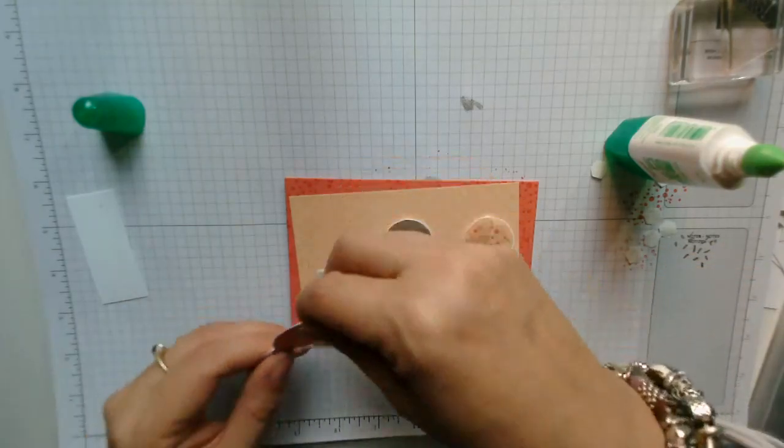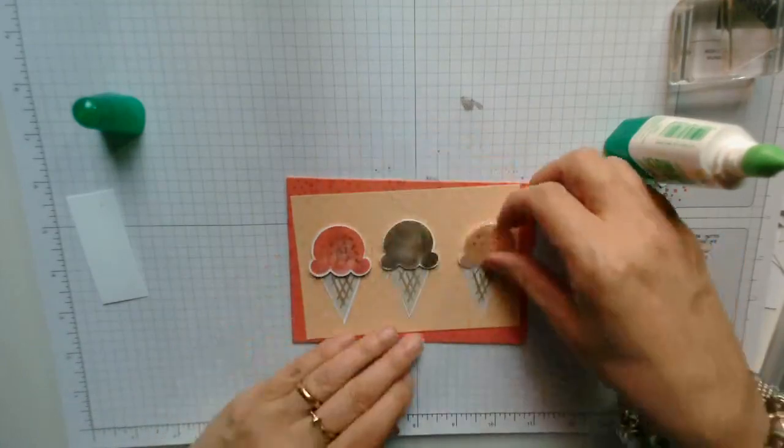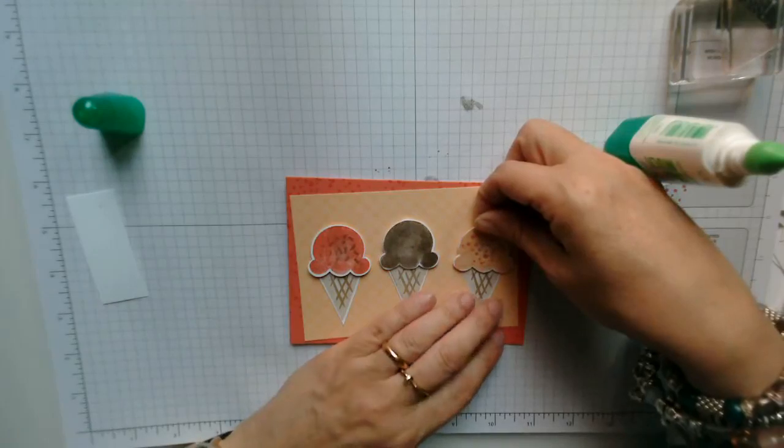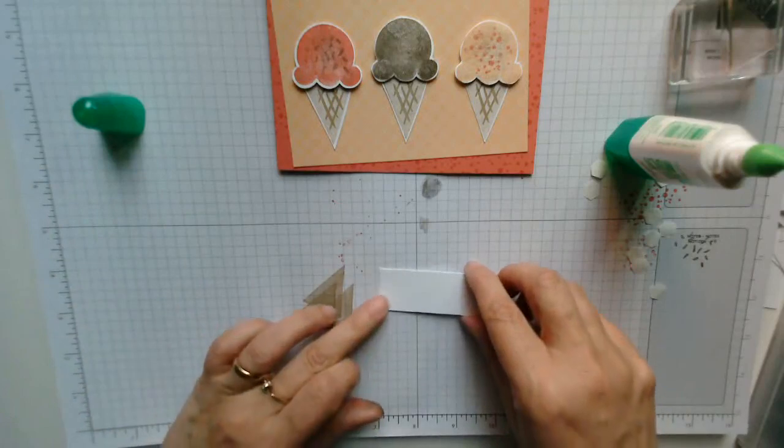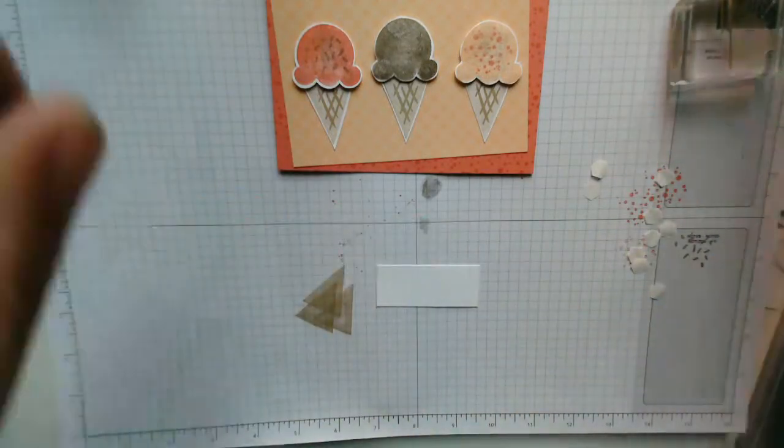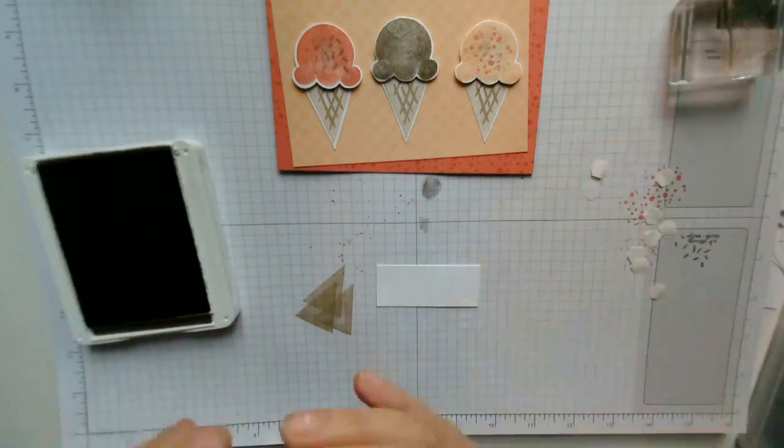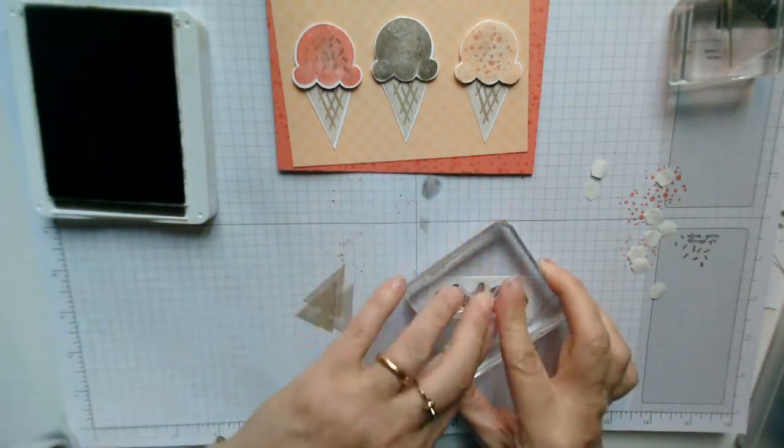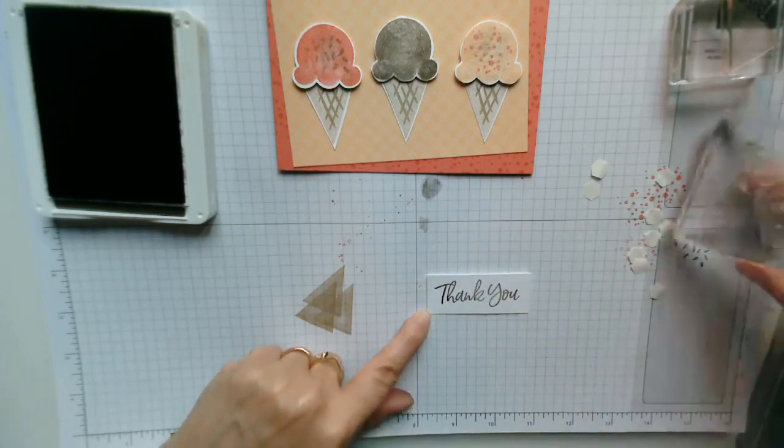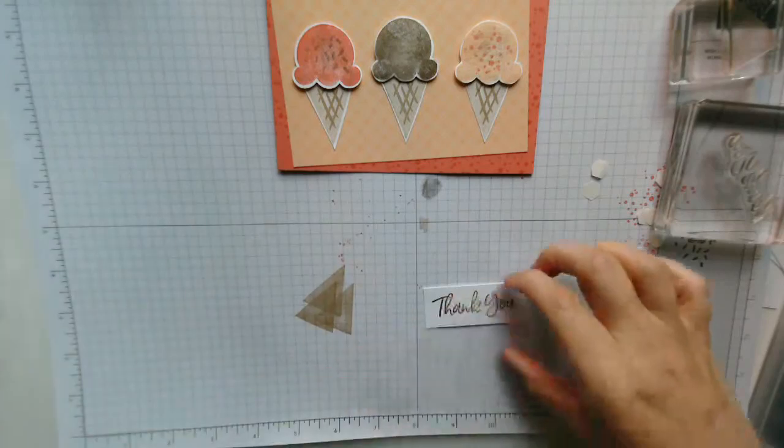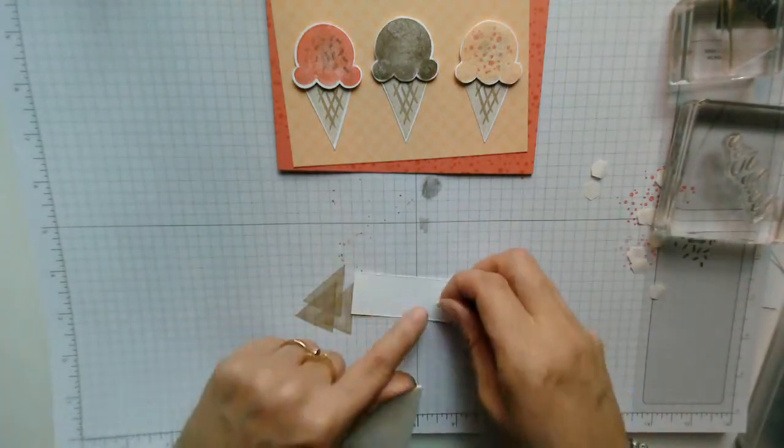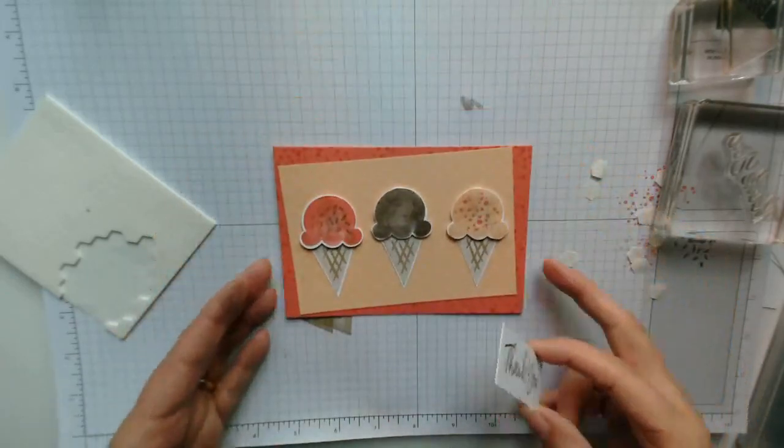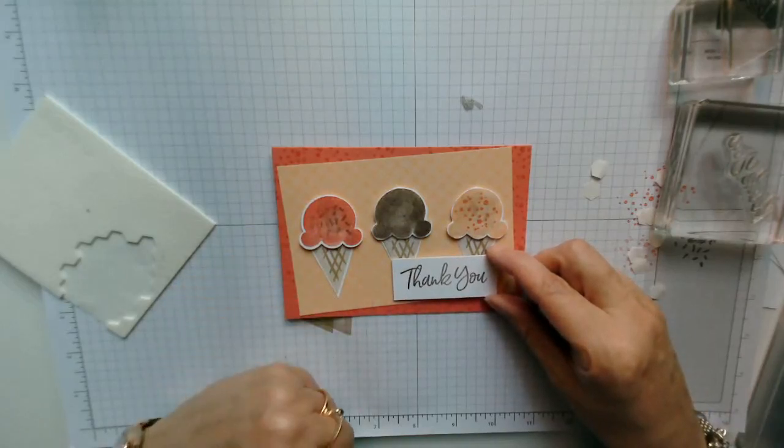The next thing to do once we've done that is to have our sentiment. And as I've already got two birthday cards, I thought I would do a thank you. And there is a thank you that comes with the stamp set. I'm going to bring in my little sentiment. And I think I will have the sentiment in the early espresso. And then again, I will add the dimensionals. And then I'm just going to work out where I would like my sentiment to go. So I'm thinking probably like that.